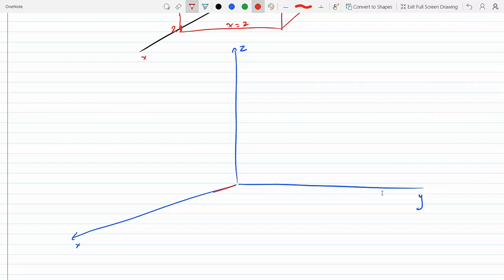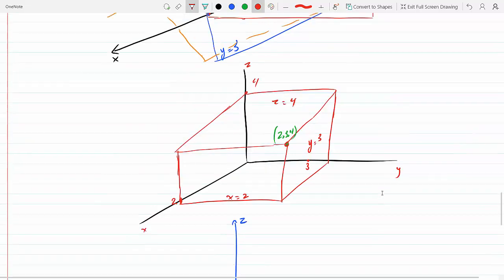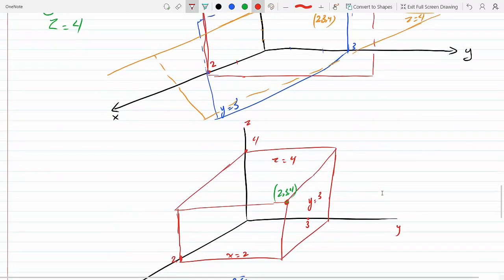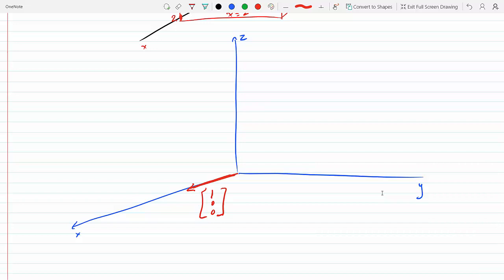Assuming this is the x axis, y axis, z axis, [1, 0, 0] would be 1 in the x, so this is vector [1, 0, 0]. Then we have [0, 1, 0]—those are basically the unit vectors i, j, k. The second vector is in the y direction: [0, 1, 0]. The third one is [0, 0, 1], so [0, 0, 1] would be up here: [0, 0, 1].